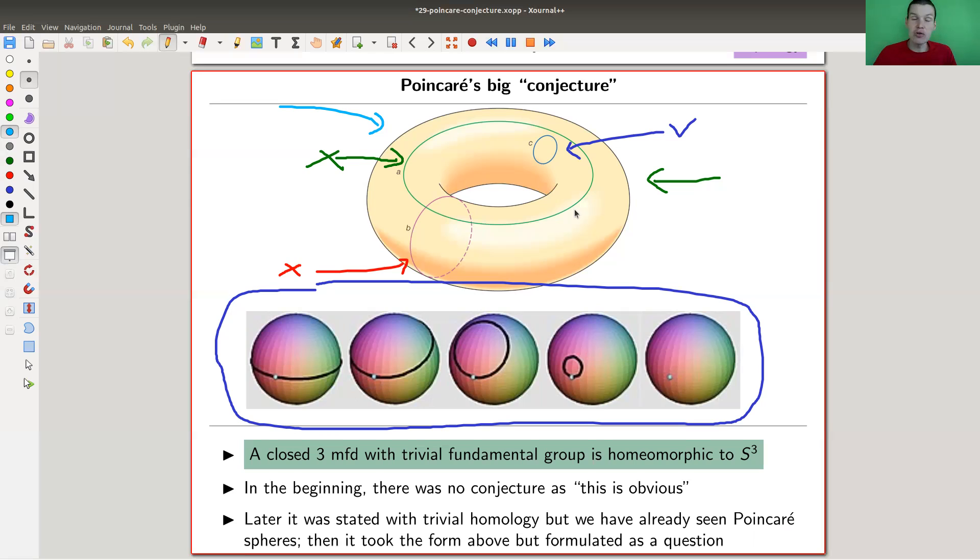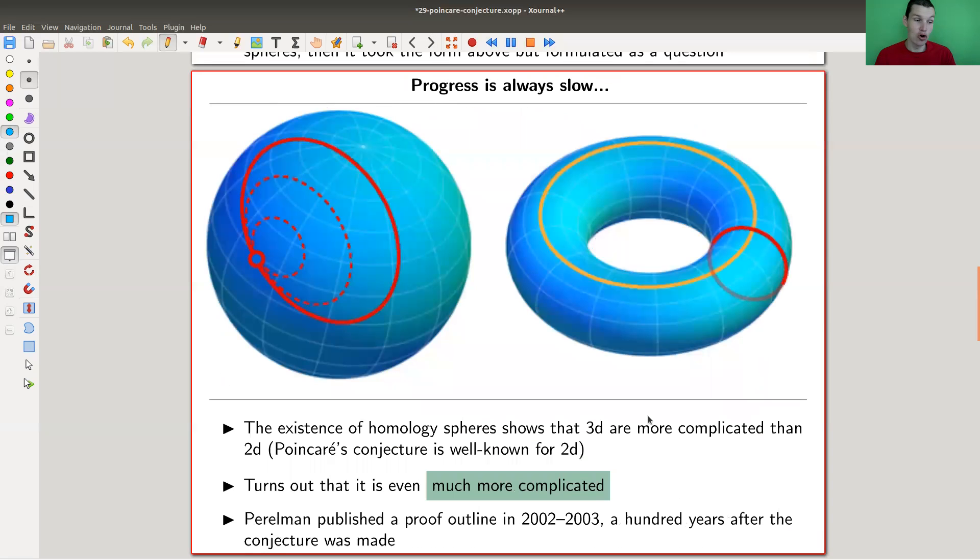It shows that at least homology is not strong enough to detect the spheres, because you have non-spheres that have the homology of the sphere. Later Poincaré reformulated this, but it was really more a question - 'could this be true?' - than a conjecture.